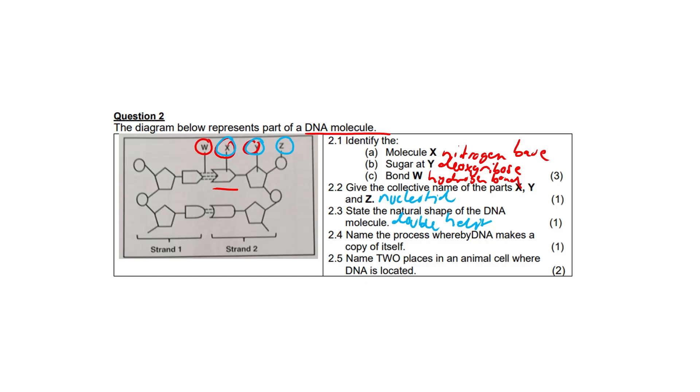The natural shape of a DNA molecule is a double helix, a twisted ladder-like structure developed by Watson and Crick. 2.4, name the process whereby DNA makes a copy of itself. This one is really easy - it's DNA replication. This occurs during the S phase of the cell cycle and ensures genetic information is passed accurately to daughter cells.